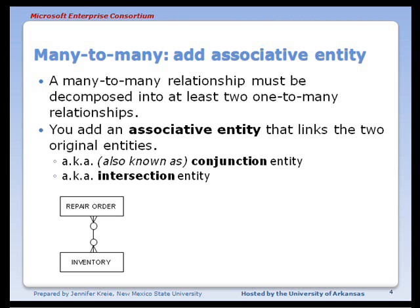You add an associative entity that links the two original entities. The associative entity may also be referred to as a conjunction or intersection entity.